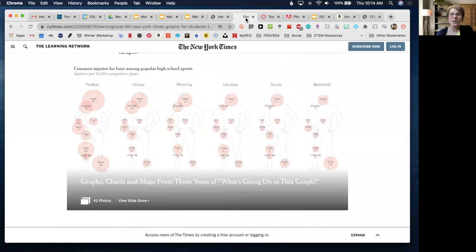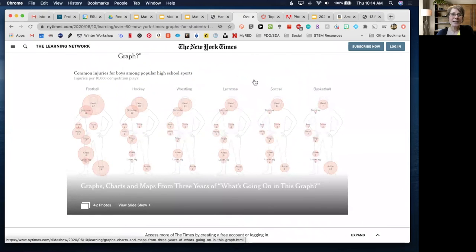I found one also on the New York Times website. In this case, it is common injuries for boys among popular high school sports. So again, you can just start the conversation about what do you notice? What do you wonder? Start asking questions. So you can see how this data is often produced in an infographic format. And so it's really important that we have students be critical consumers of the data and ask questions about the data that they're looking at.